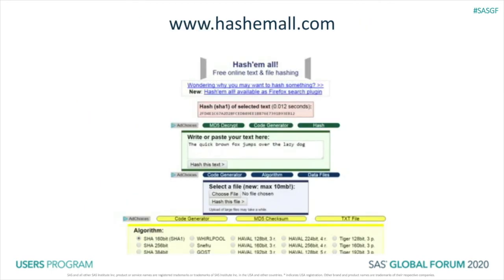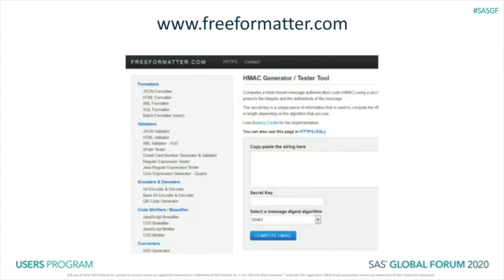I also want to point out a couple of very handy websites. If you're doing any kind of work with hashing, you can go to hashemall.com — type in whatever you need to hash or upload it as a file, and you can get the hashes for many methods, including all those the hashing function supports. Very handy. And if you're wanting to work with HMAC, I recommend freeformatter.com, where you can enter your secret key and the text you wish to hash with HMAC. I used both of these sites during development.